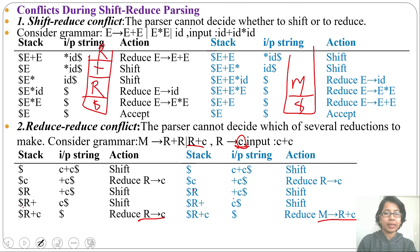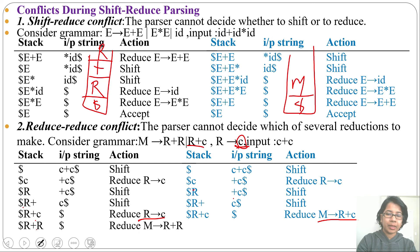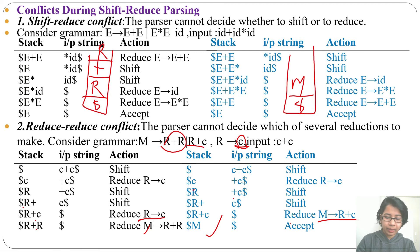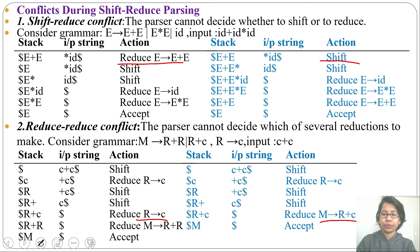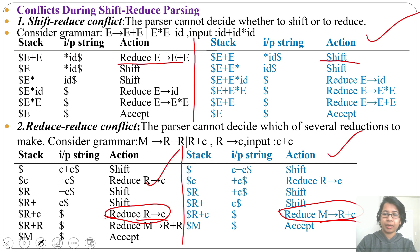The parser is confused between two reduce operations: whether to reduce just C, or to reduce R plus C. So this is a reduce-reduce conflict. This first parser considers the reduction of C to R, while the second parser reduces R plus C to M. There are two reduction operations: C reduces to R, and R plus C reduces to M. If the parser cannot decide between several reductions, that is a reduce-reduce conflict. Now the stack contains R plus R, and R plus R is a handle — it can reduce to M. Stack contains M, and M is the start state, so it will accept.